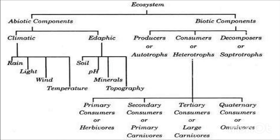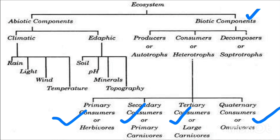The ecosystem consists of biotic and abiotic components. Under biotic components: producers or autotrophs, consumers and heterotrophs, and decomposers or saprotrophs. Consumers are divided into primary consumer or herbivore, secondary consumer or primary carnivore, tertiary consumer or large carnivore, and quaternary consumer or omnivores — for example, human beings and many birds. Under abiotic components: climatic factors such as rainfall, light, wind, and temperature; and edaphic factors such as soil, pH of soil, minerals, and topography.